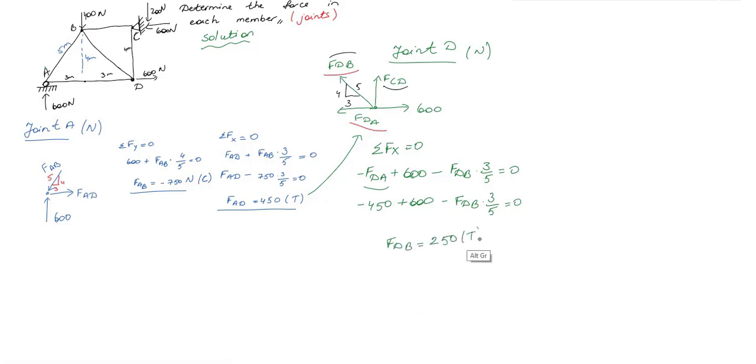After that, write equilibrium equation for y direction. I have FCD and I have y component of FDB which will be equal to FDB times 4 over 5. I find from here FCD as 200 Newton.